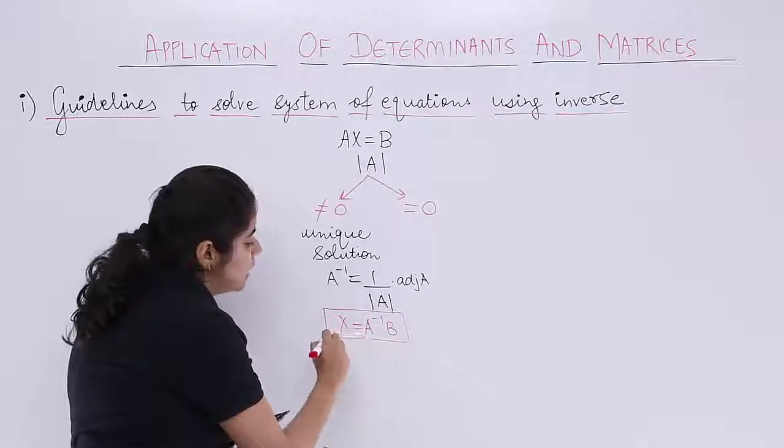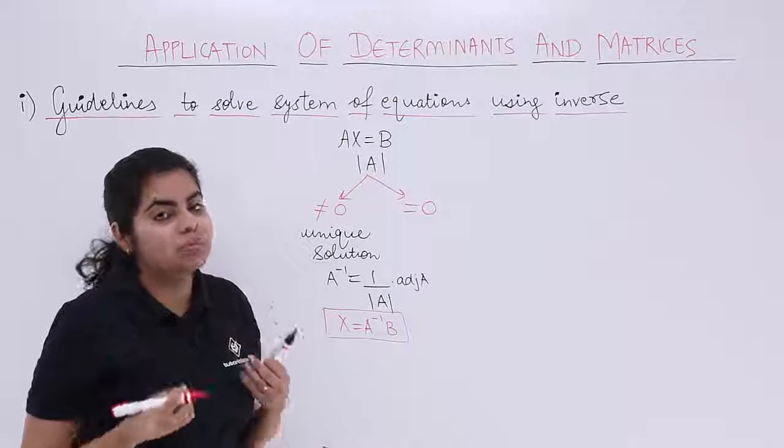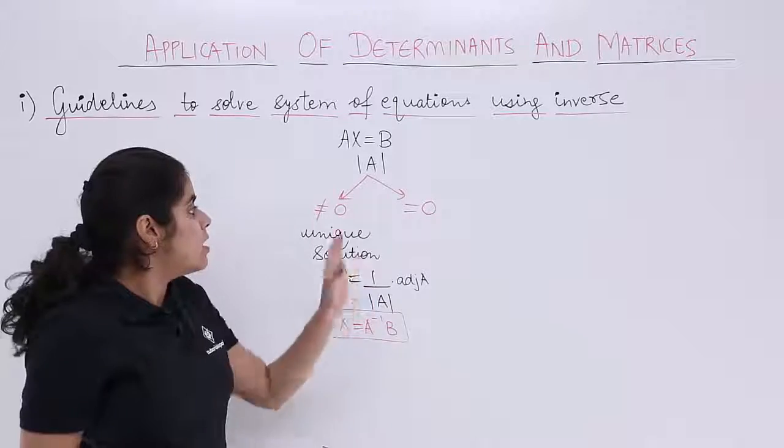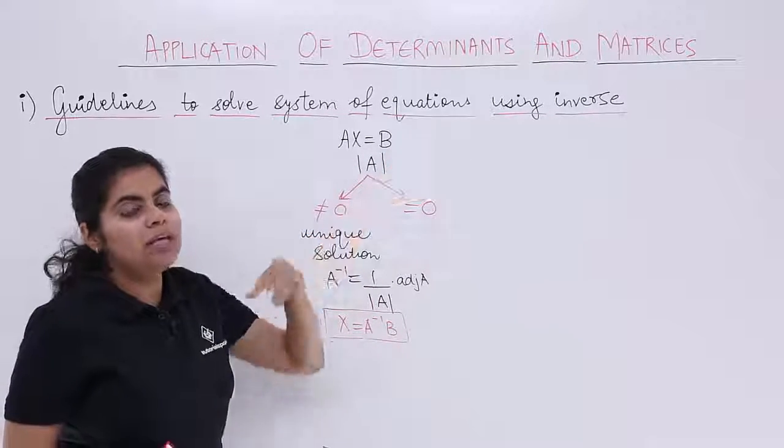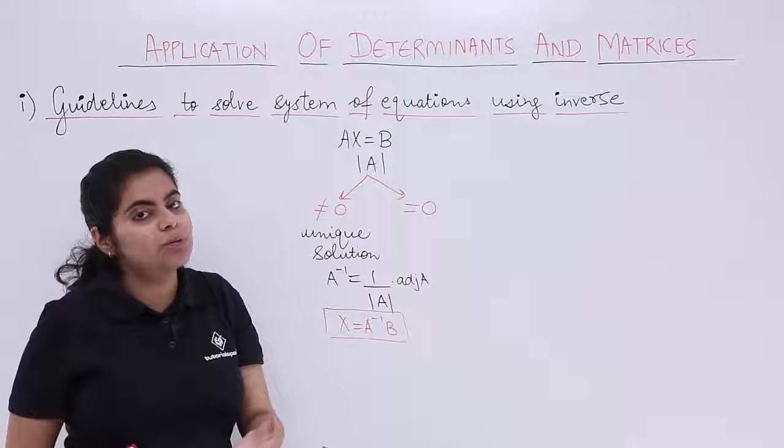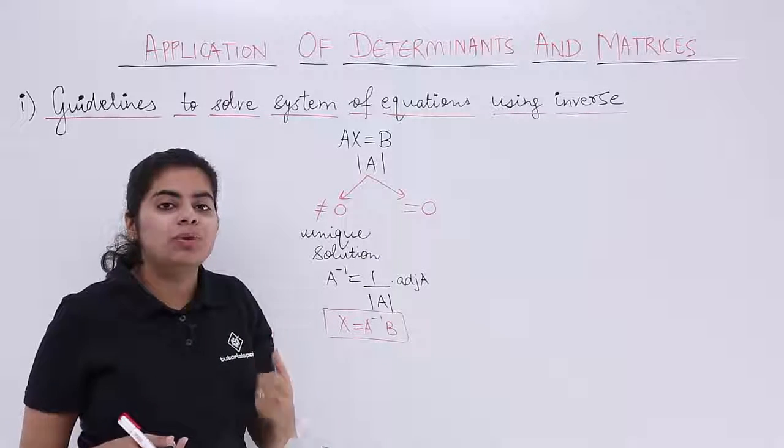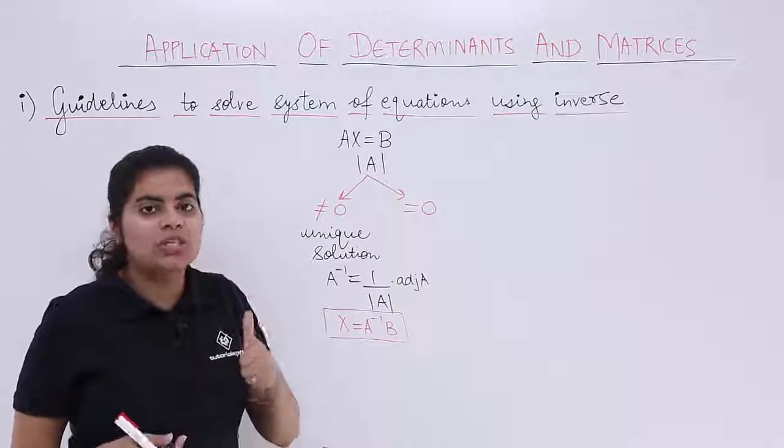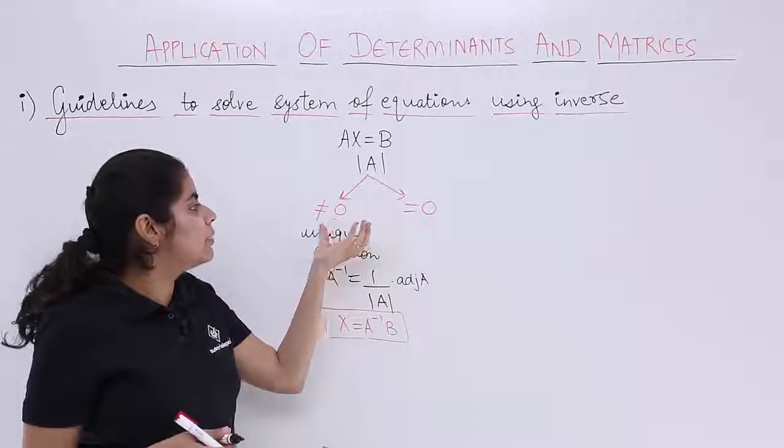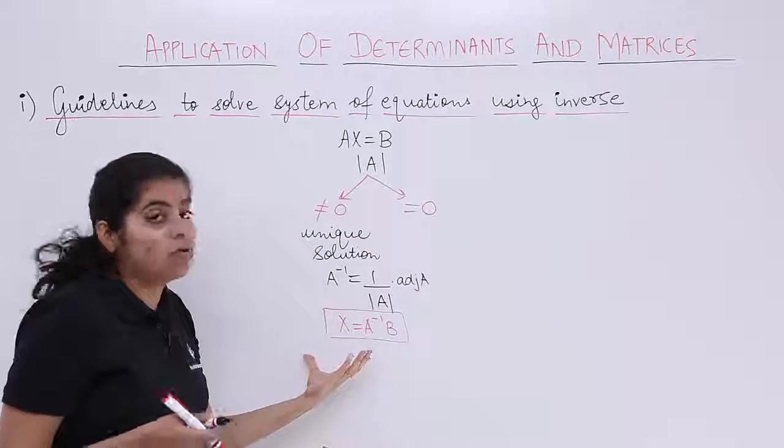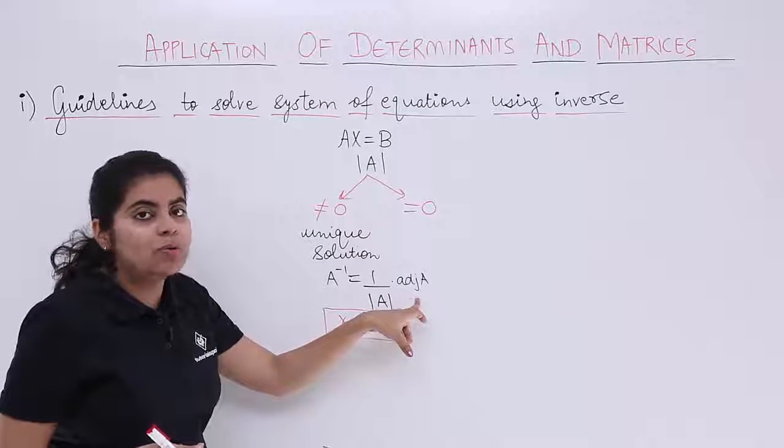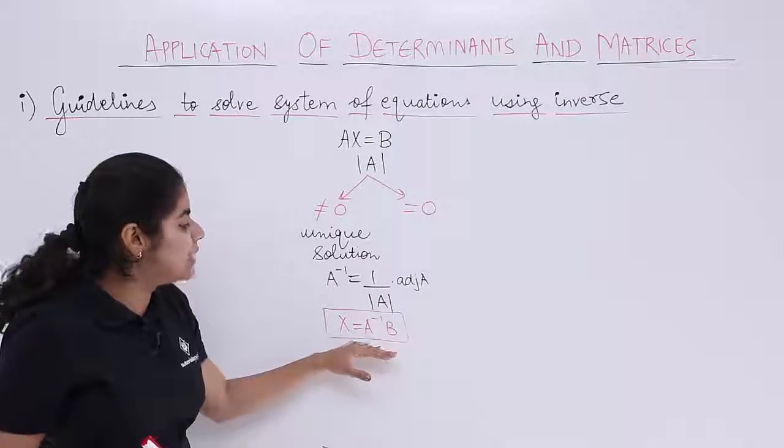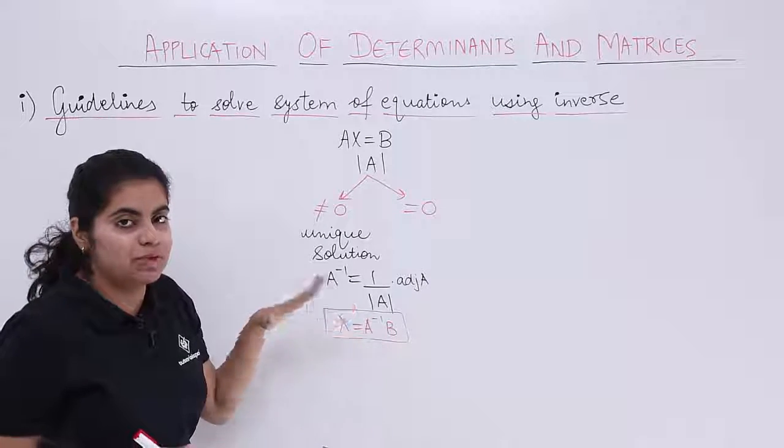This is the procedure. Things will become more clear when we do the questions in the successive videos. But for now you need to understand that AX = B is how you express the given system of equations. To solve it you need to first and foremost calculate the determinant. Determinant can be 0 or not 0. If not 0, very good you have one solution for sure. And A inverse is computed by this formula, and the solution is X = A inverse B.